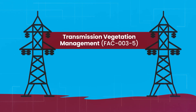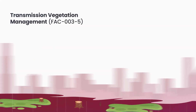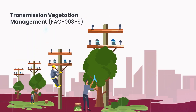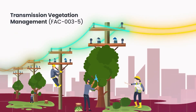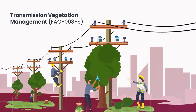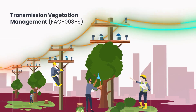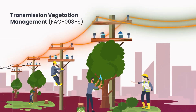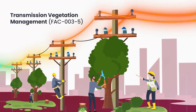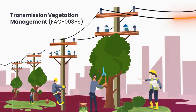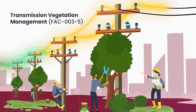Transmission vegetation management, FAC-003-5. It requires transmission owners to maintain vegetation management programs that prevent outages by ensuring transmission lines remain clear of vegetation that could cause faults or interruptions.